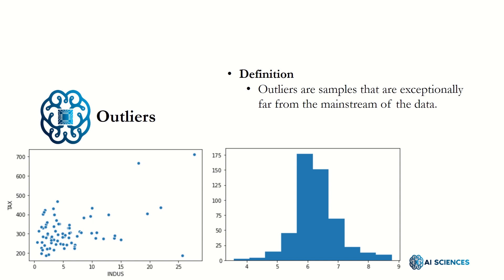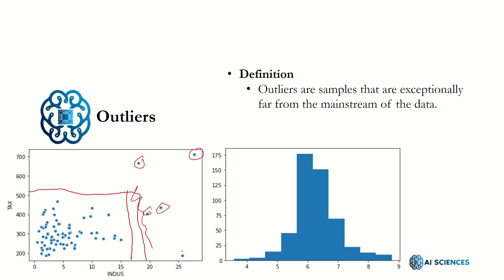So first of all, what is an outlier? According to the definition, outliers are samples that are exceptionally far from the mainstream of data, which means if a data sample doesn't look like an average sort of data, we call it an outlier. For example, in this graph, you can see that mostly data lies somewhere over here, and these points are not in ordinary data, so we may call them outliers.